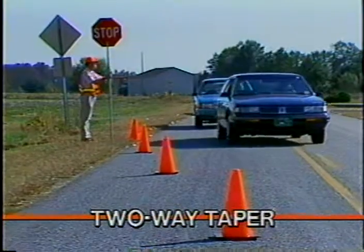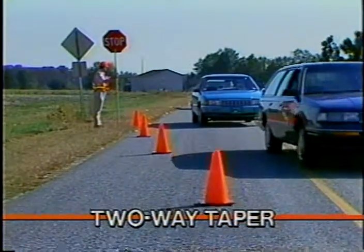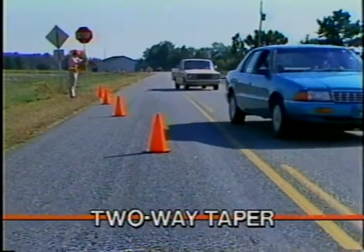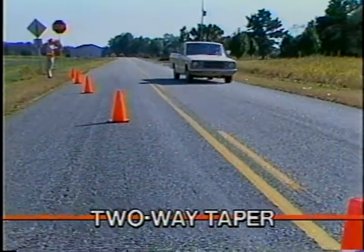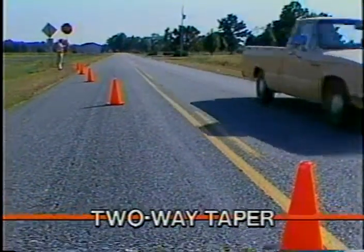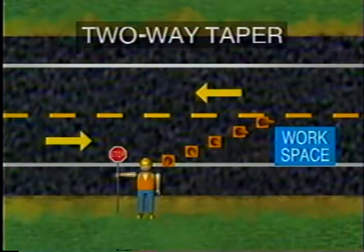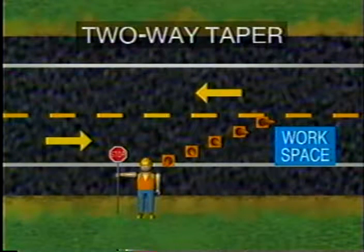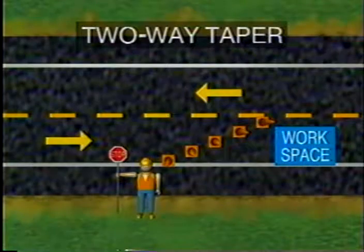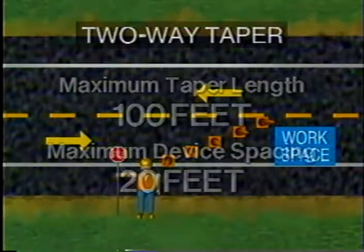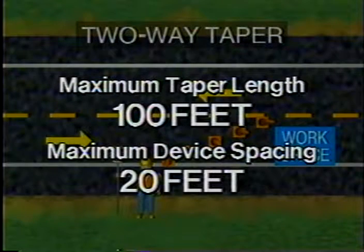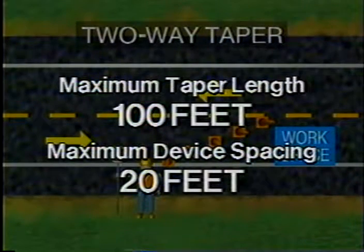The two-way traffic taper is used in advance of a work area that occupies part of a two-way road when the remainder of the road is used alternately by traffic in either direction. A short taper is used to slow down traffic by giving the appearance of restricted alignment. One or more flaggers or temporary traffic signals are used to assign the right-of-way in such conditions. Two-way traffic tapers should be a maximum of 100 feet long with channelizing devices spaced at a maximum of 20 feet to provide clear delineation of the taper.